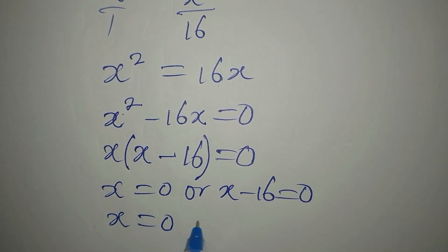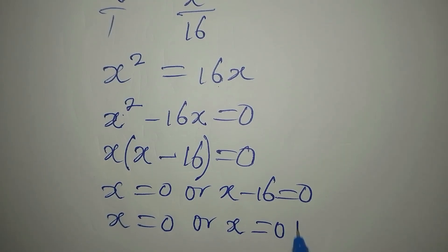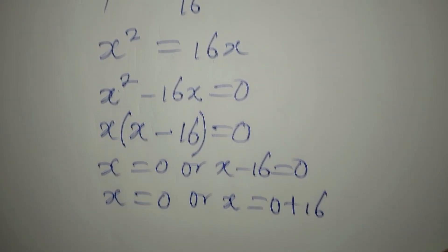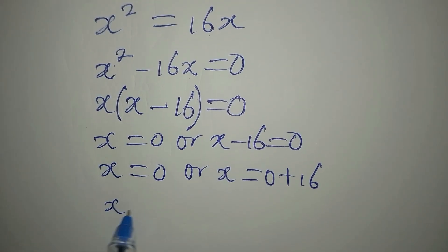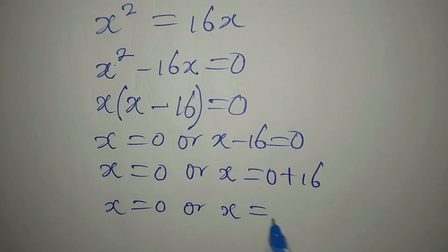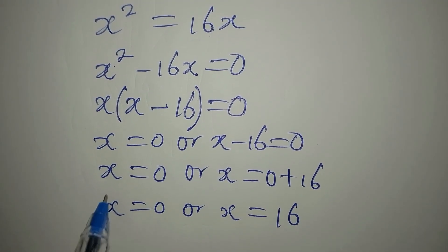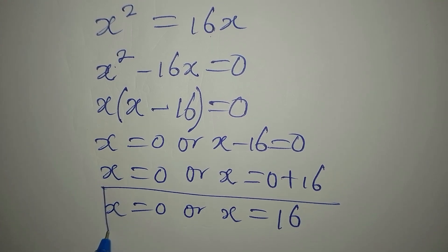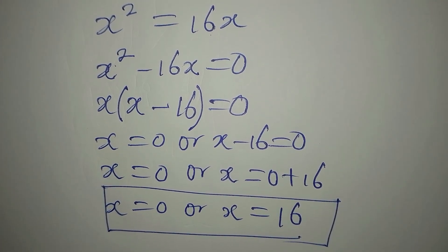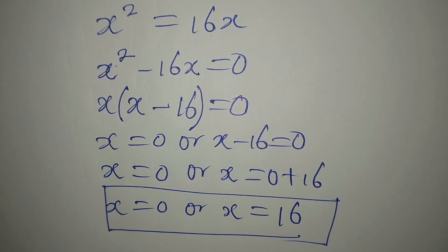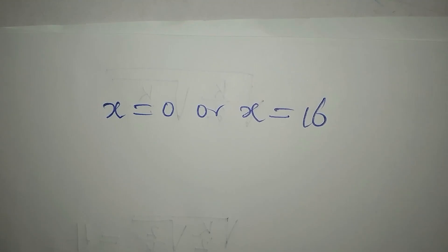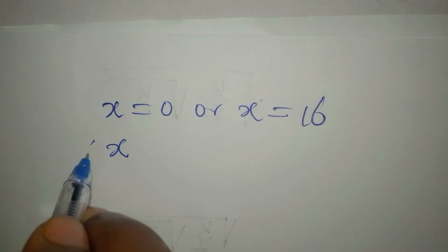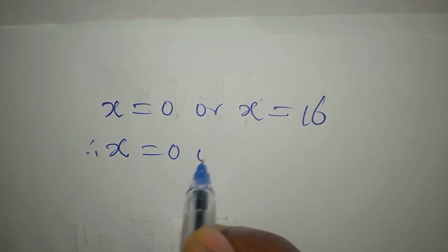So x equals zero or x minus 16 equals zero, giving x equals 16. Therefore x equals zero or x equals 16. We now verify whether both values satisfy the original equation.